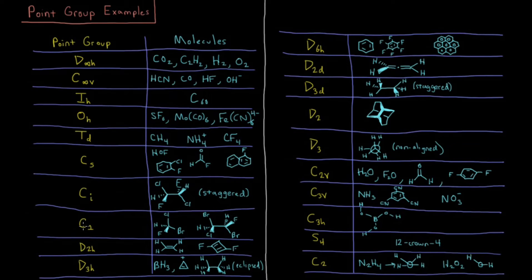C1 is basically no symmetry. Things like CHF, CLBR, there's kind of no symmetry elements there besides just the identity. Same thing here. These are, you'll notice there's no matching groups there.